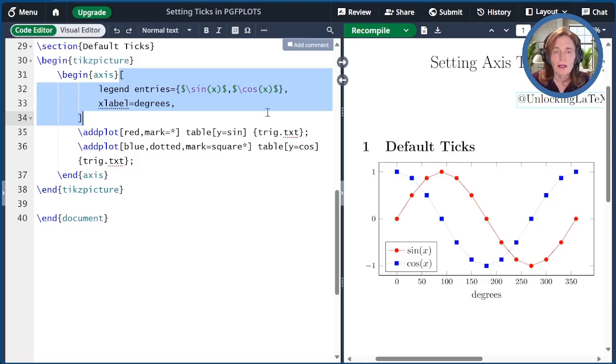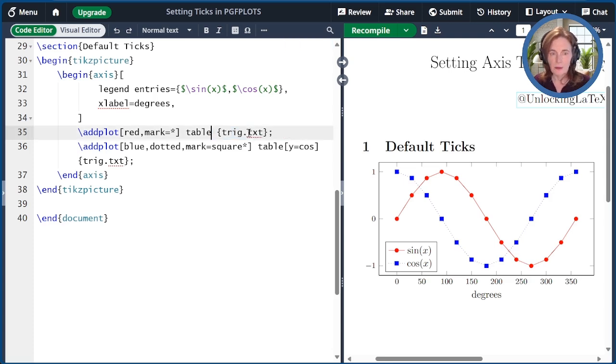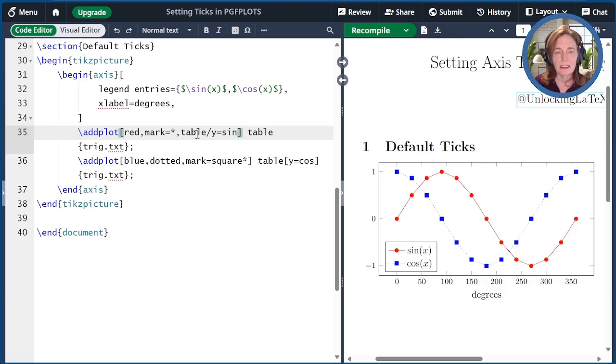Before we go on, I want to show some tricks with styles, because this will make the plots in the remainder of the video simpler and neater. First of all, I can move y equals sine from a table option to an addplot option as follows. I've just prepended the y with table slash. I can do the same thing with the cosine in the second addplot command. I move that again to the addplot options, just prepending it with the table slash. When I recompile this, nothing has changed in the plot.